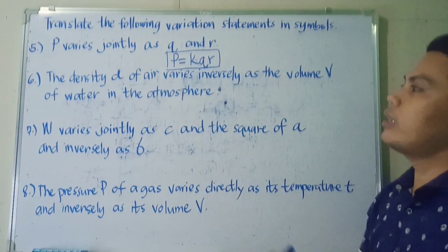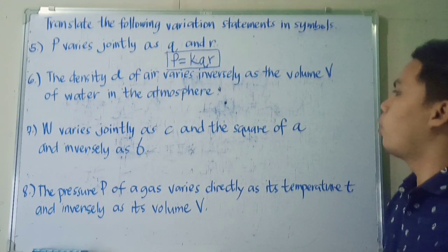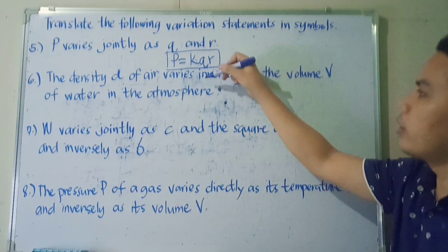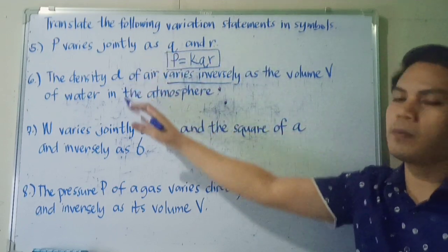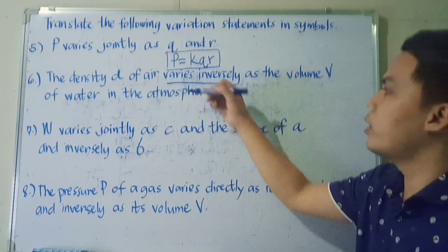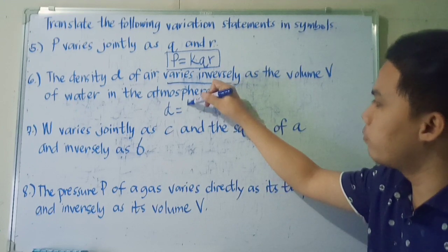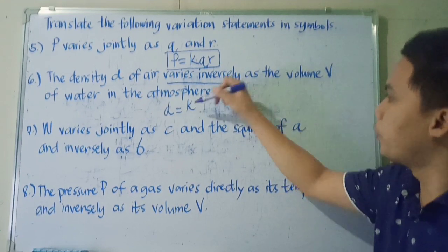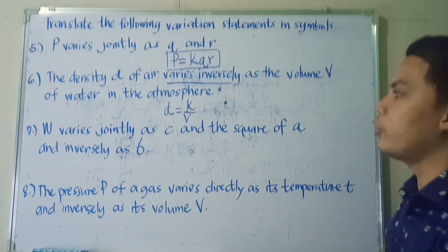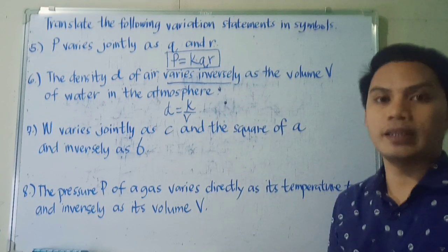Next. The density D of air varies inversely as the volume V of water in the atmosphere. So the keyword is varies inversely. So in this case, number 6 is the same as inverse variation. So we have density D, our dependent variable. Then we have also K over our volume V. So this is the representation of the statement in number 6.